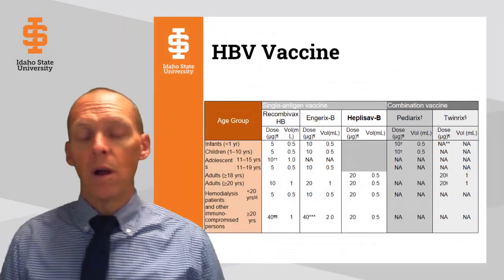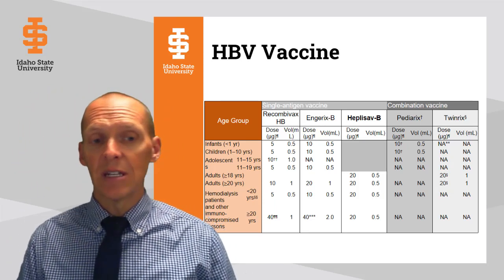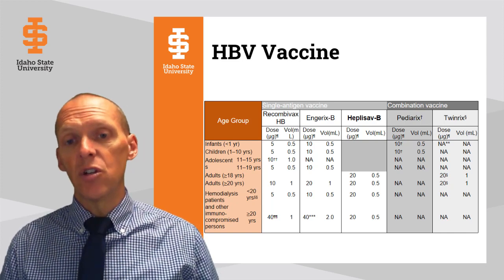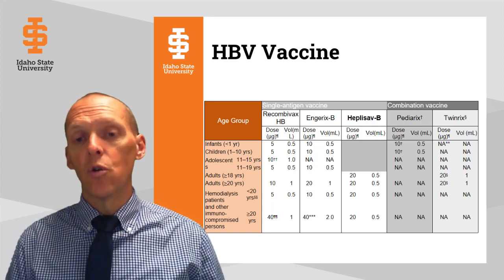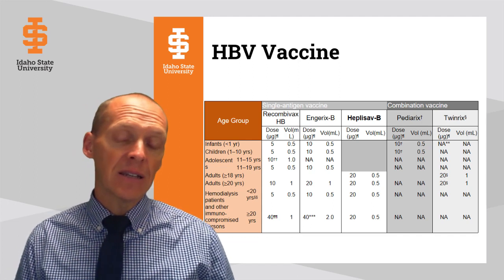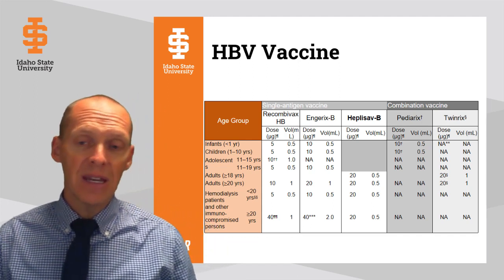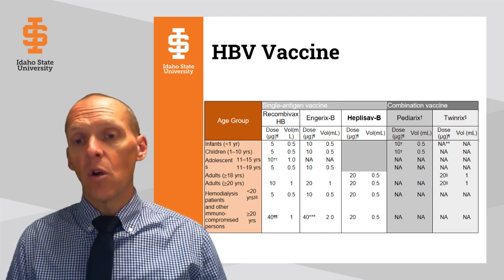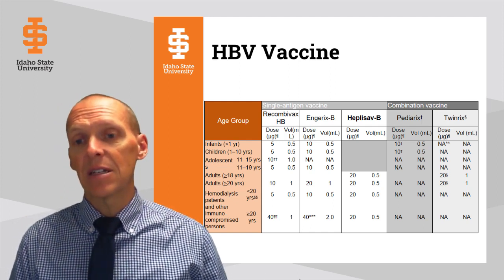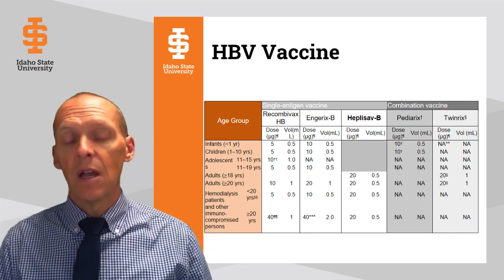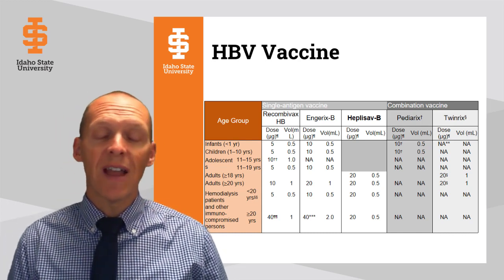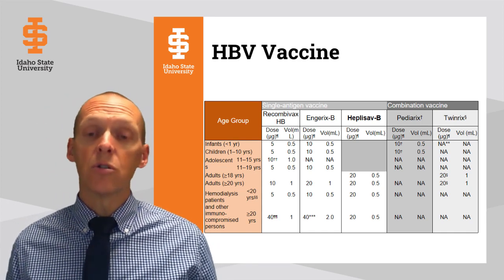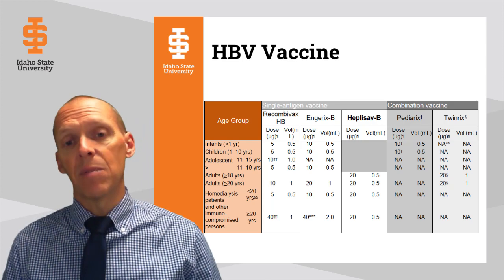There is a more in-depth table for your reference that summarizes the different types and different ages. One thing to note is that Heplisav-B, the newer novel one, is not indicated yet in individuals under 18, nor in women who are pregnant. There's also the combination of hepatitis A and B vaccines such as Twinrix, in which you are usually giving three doses of hepatitis B compared to two doses of hepatitis A.